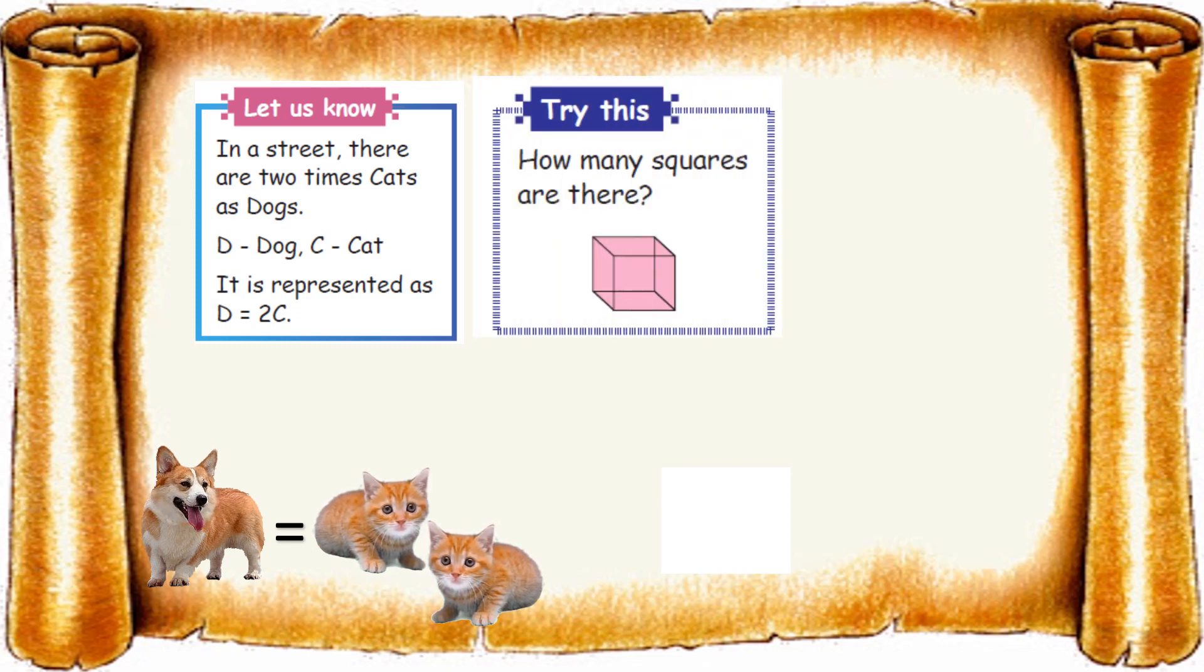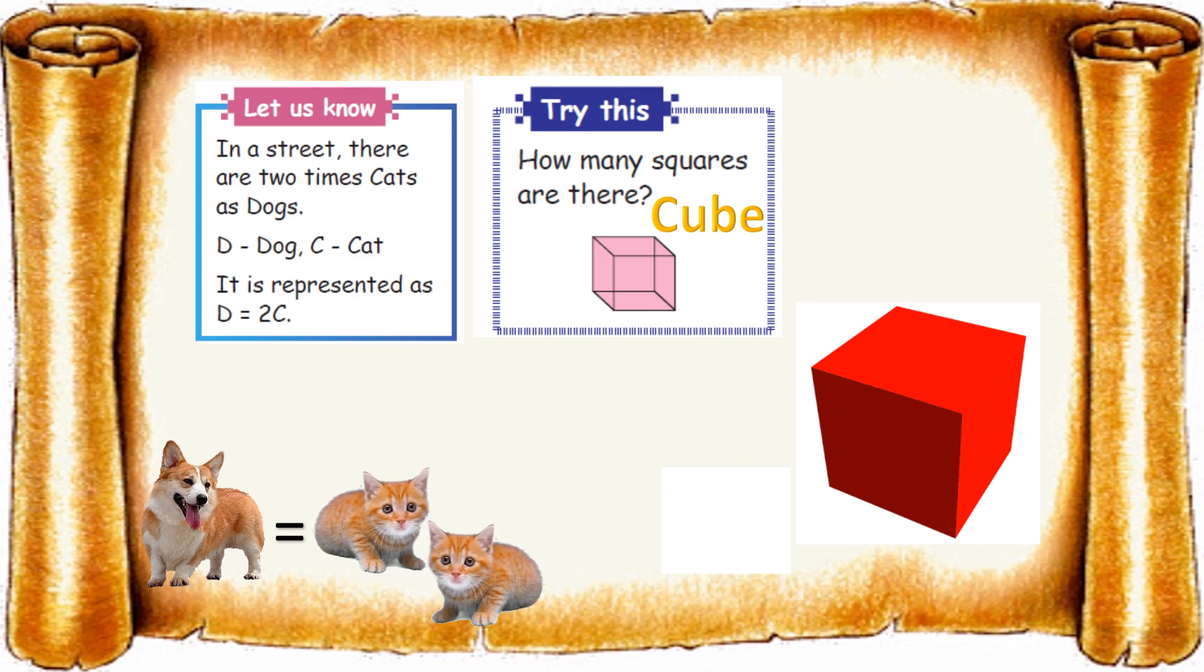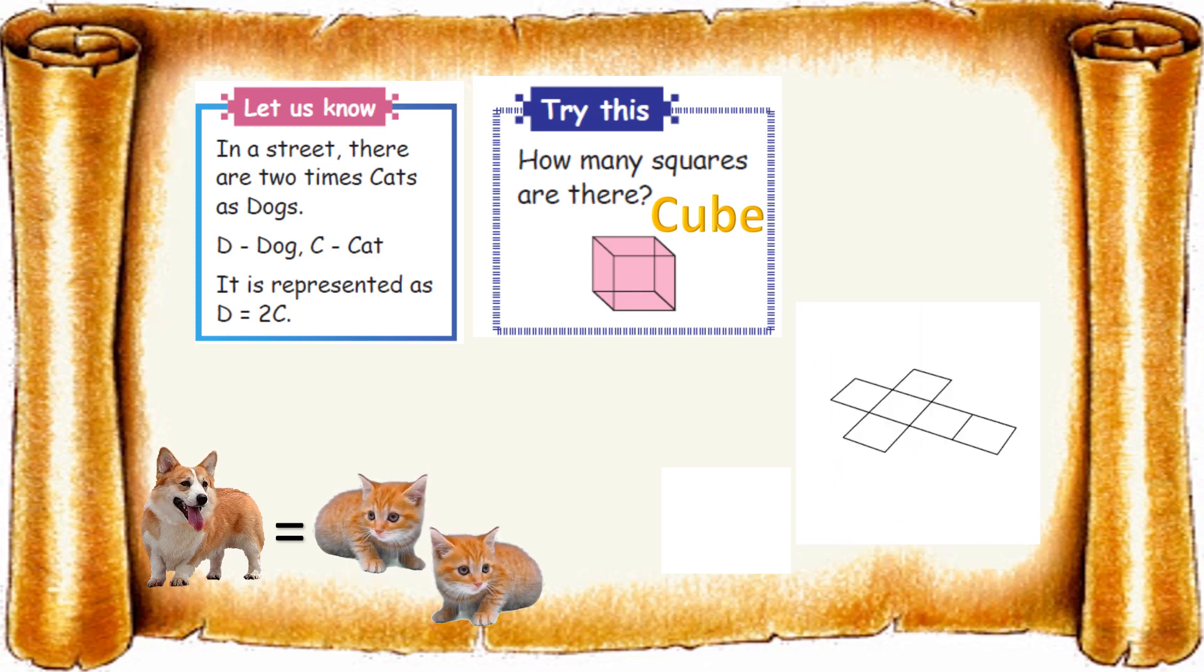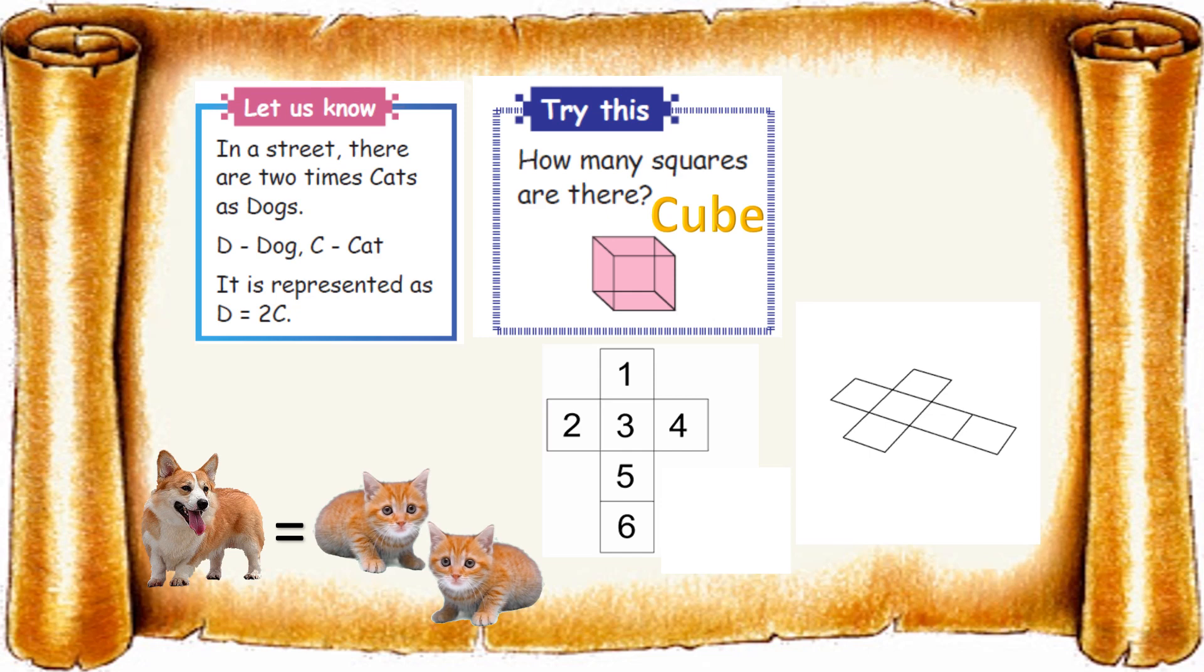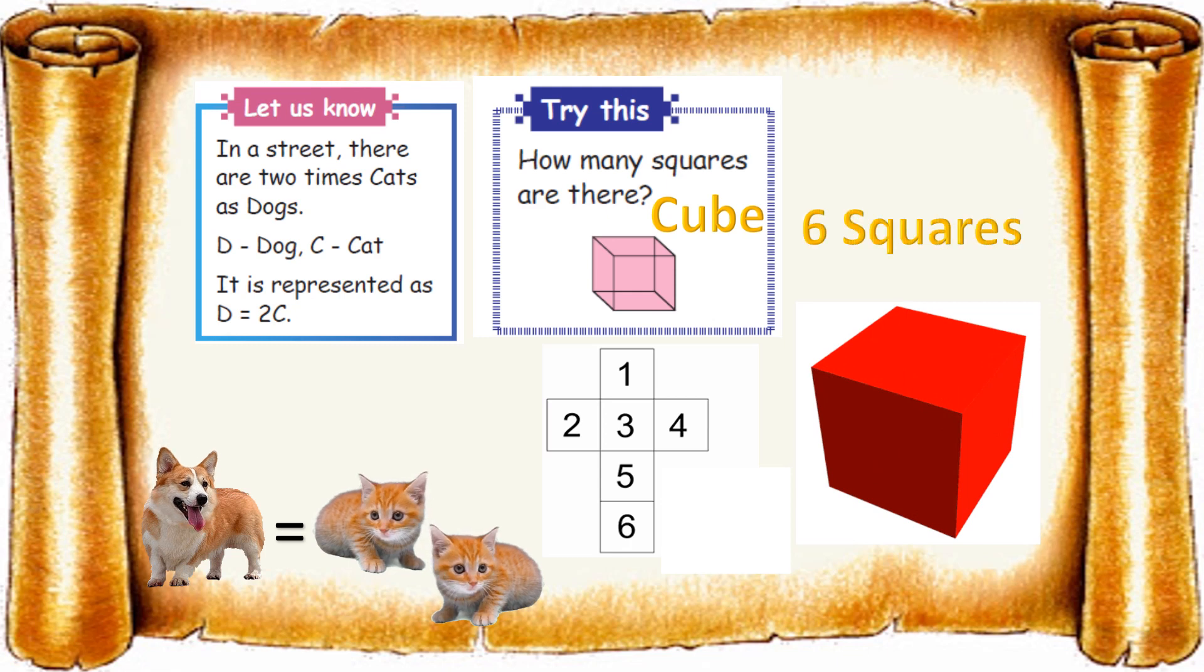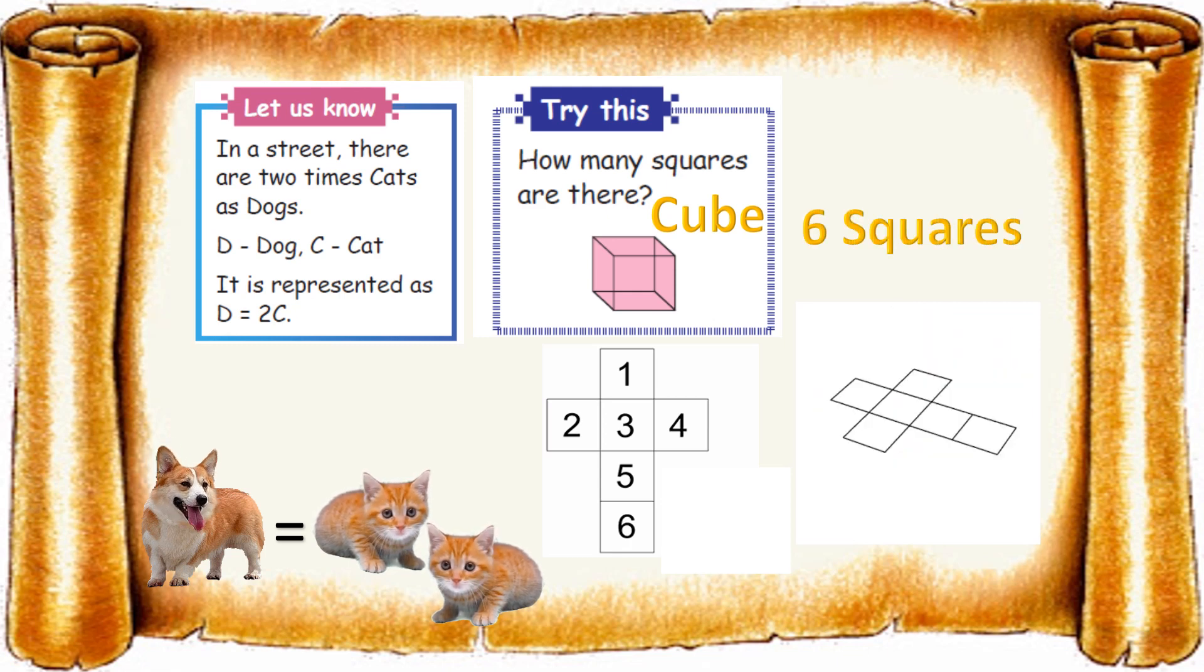Try this: how many squares are there? What shape is this now? It is a cube. You might have learned this in the geometry lesson. This is the net of the cube. From that net we fold and make it like this. How many squares are there? Yes, six squares are there in the cube shape.